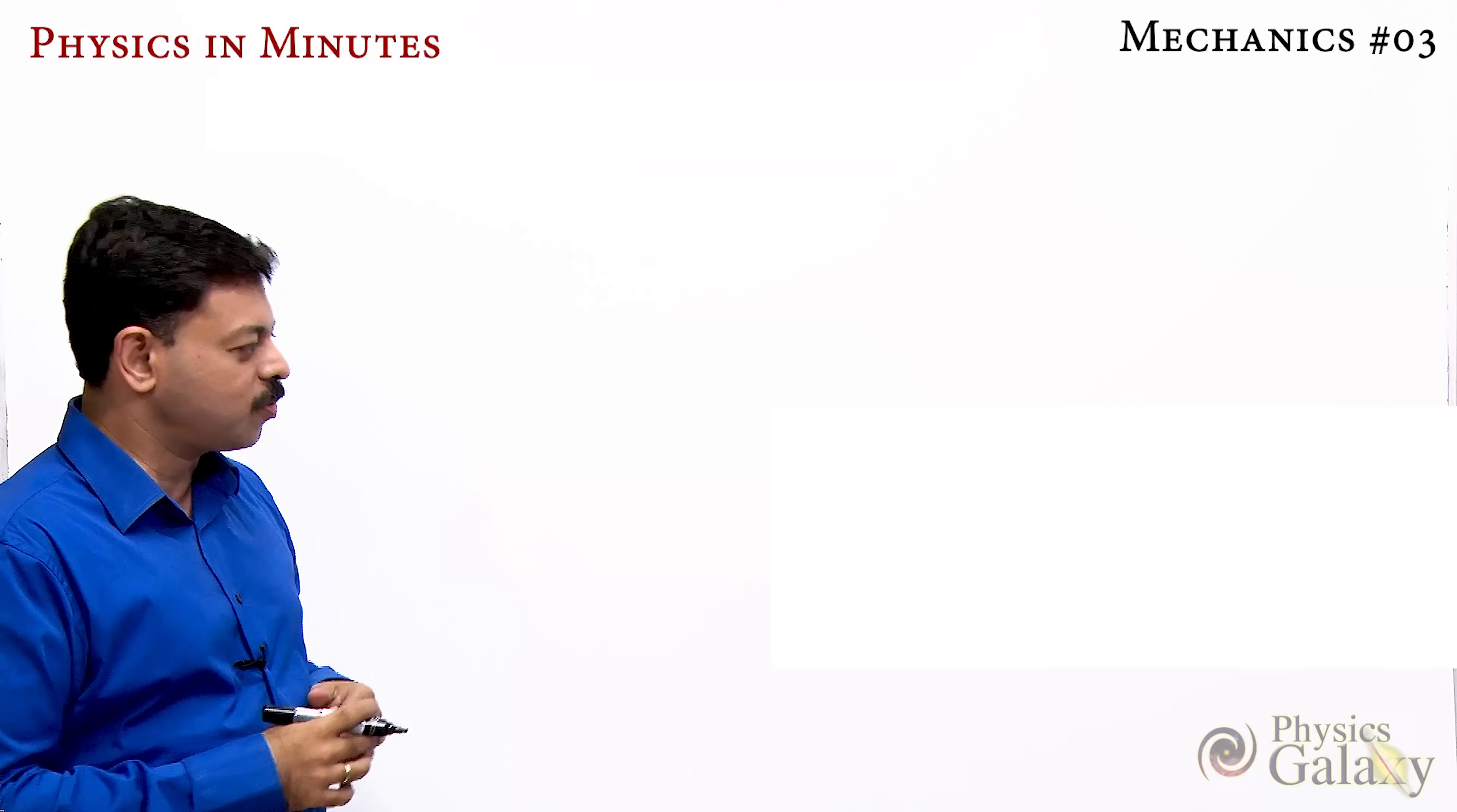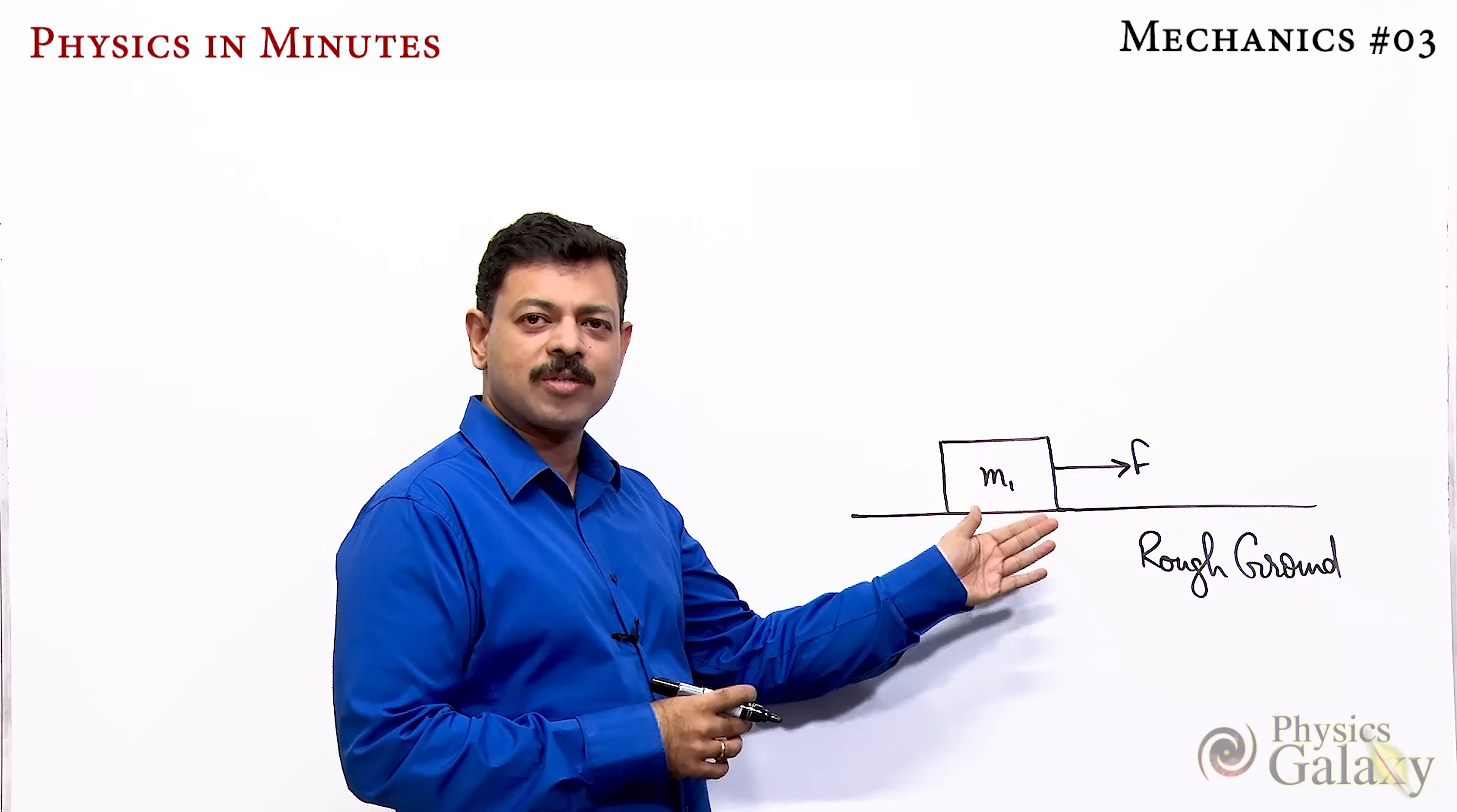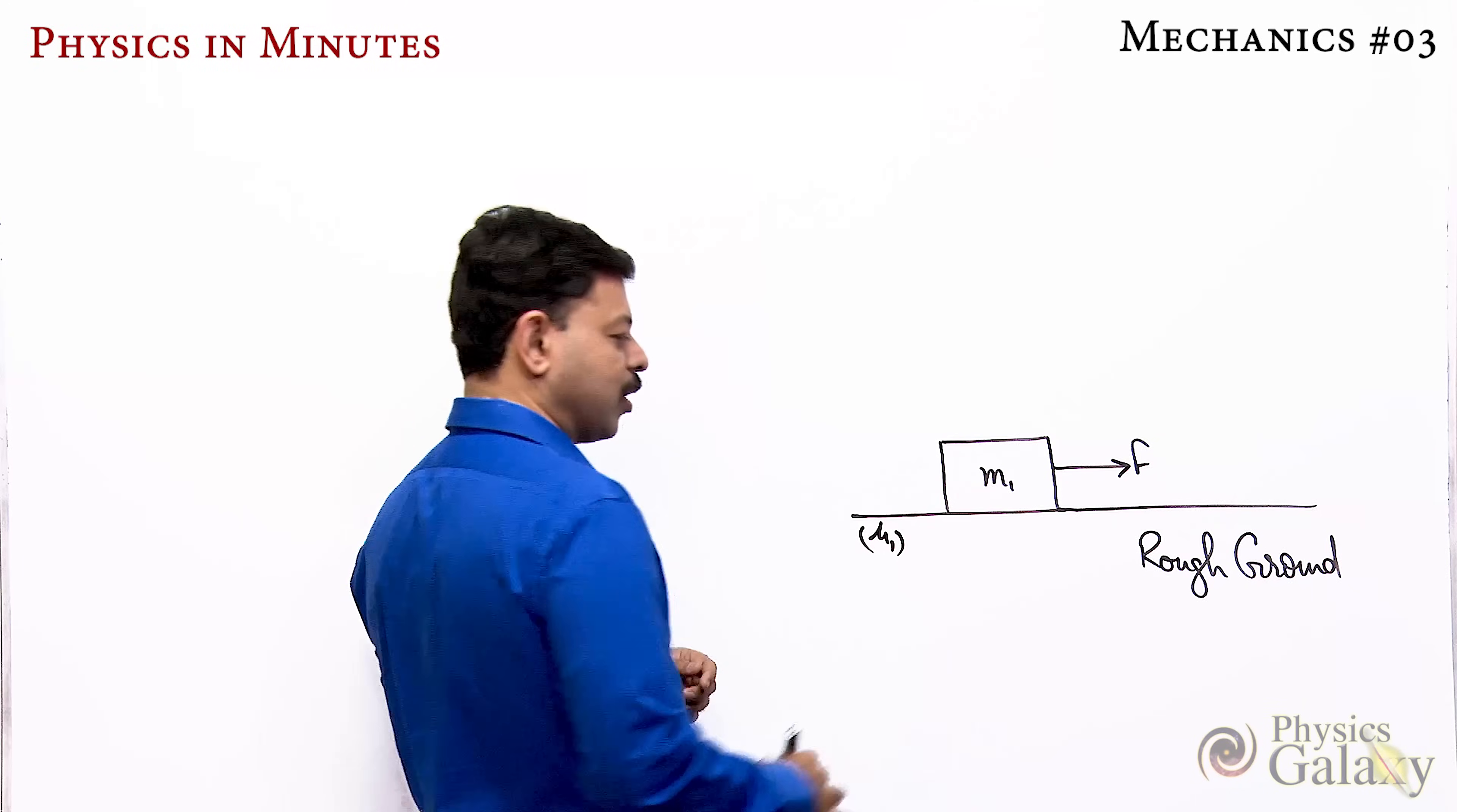So have a look at the situation. A very simple case: a rough ground, m1 mass block, and force F is pulling it. Friction coefficient here is μ1.